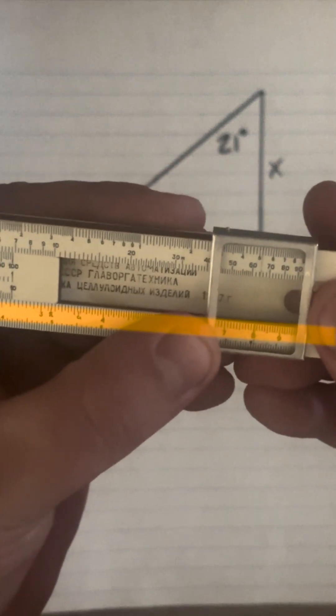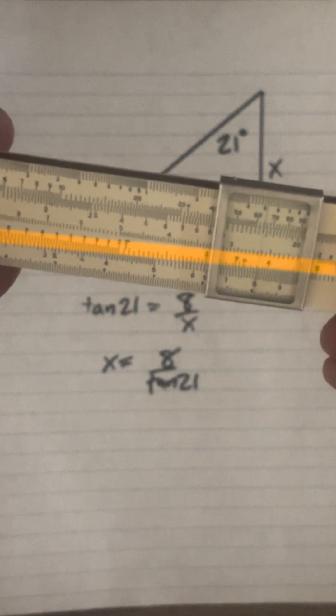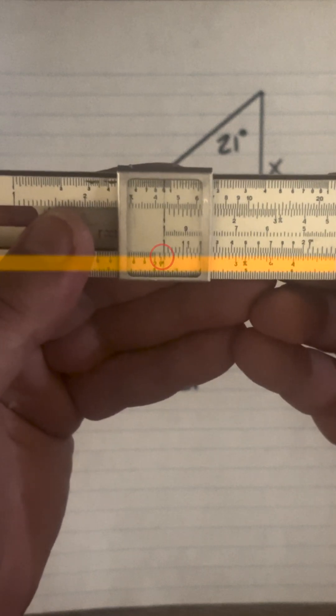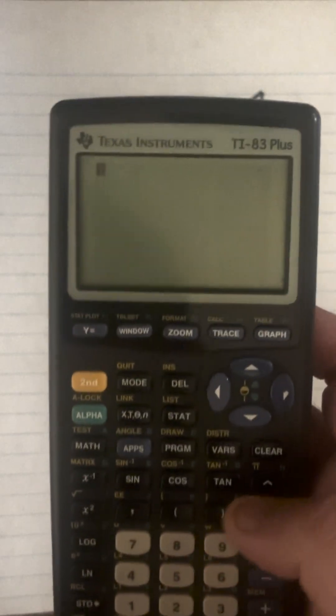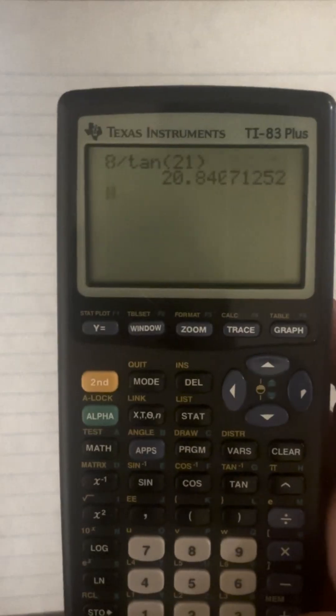We'll slide our C scale over to find 3.8 on the C scale and slide our hairline down to the left index on C. Below it we'll find 20.8, and if we check on our calculator, 8 divided by tangent of 21 equals 20.8.